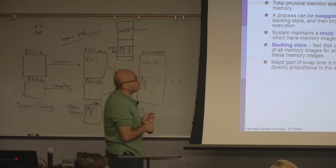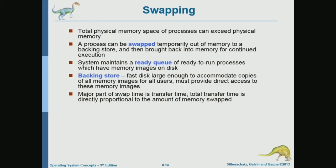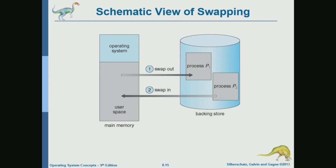Now let's talk about swapping. Swapping is moving the memory block that belongs to a program from memory to disk because we don't have enough memory. This swapping of a whole program is something that modern operating systems do not do — we'll understand why in a minute.